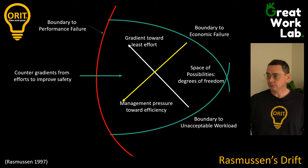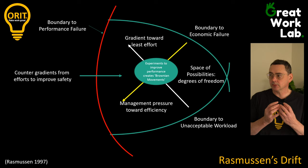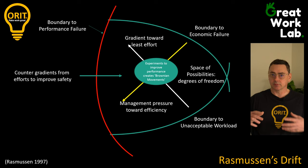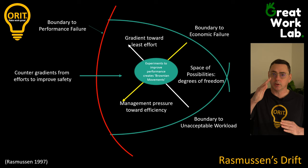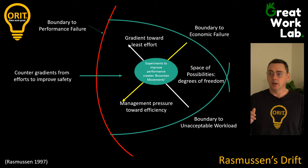What results from these opposing forces are little experiments within the system as we move around the space of possibilities. Rasmussen calls these 'Brownian movements' — a physics term referring to small random motions. With one force pushing one way, another pushing another way, and the counterforce gradient from safety, it creates these little movements within the safe boundaries of the system.